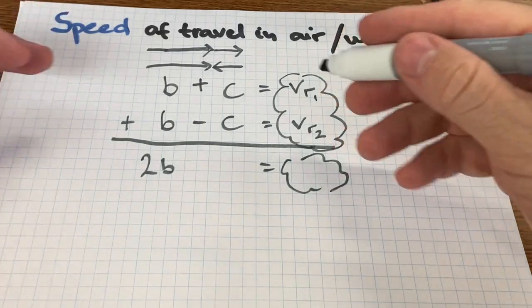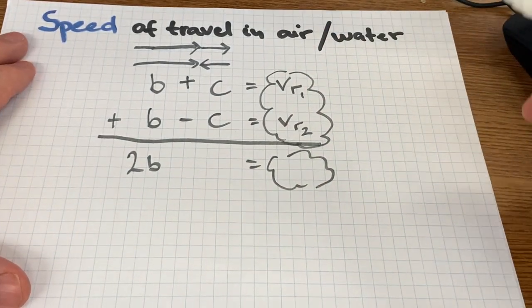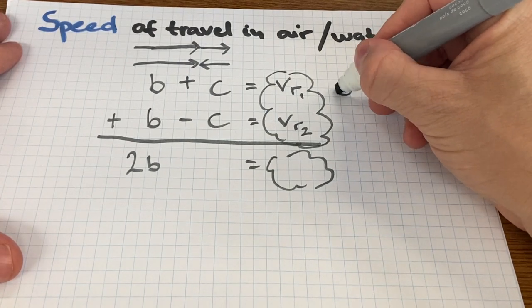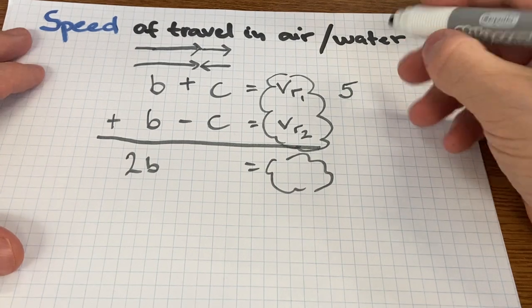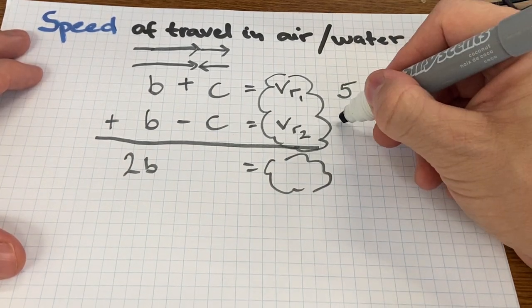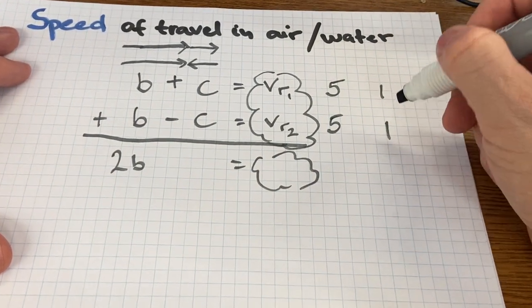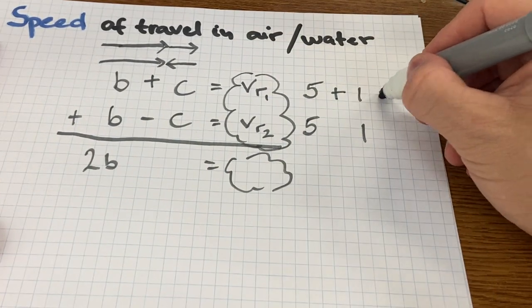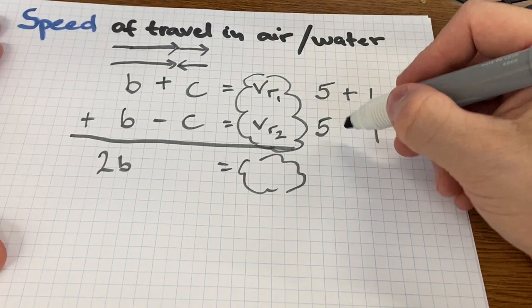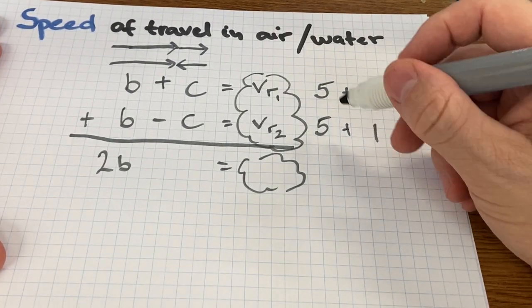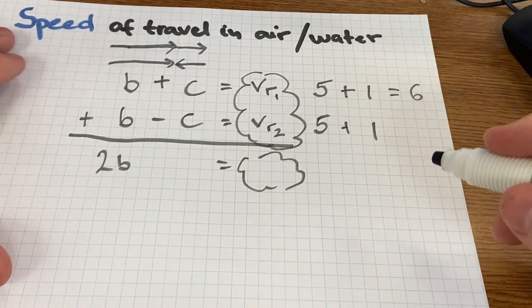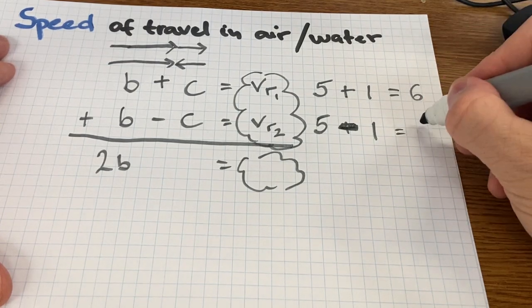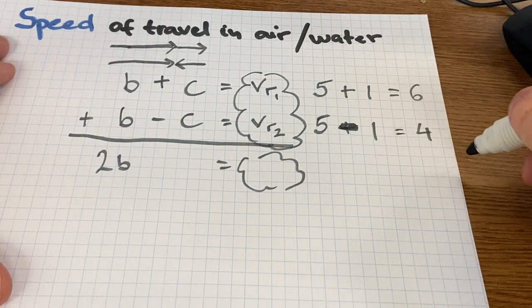So let me just plug some simple one-digit numbers here to show you how this works. Say the boat speed is 5 and the current is 1. Here the boat is aided by the current and their resultant velocity is 6, and here the boat is opposed by the current, and the resultant velocity is 4.